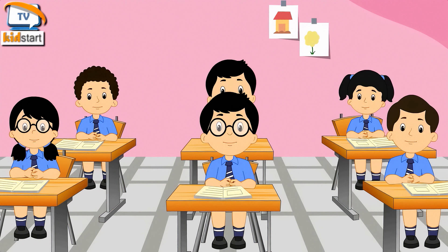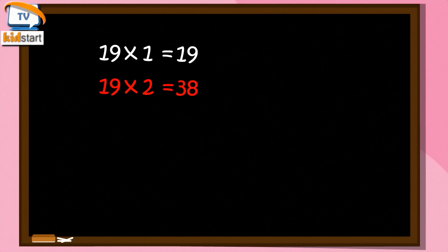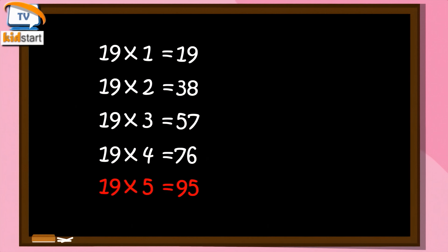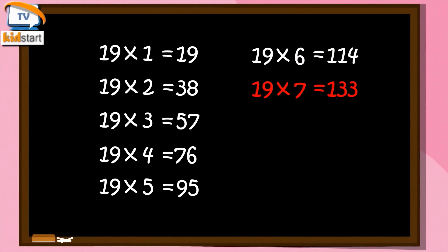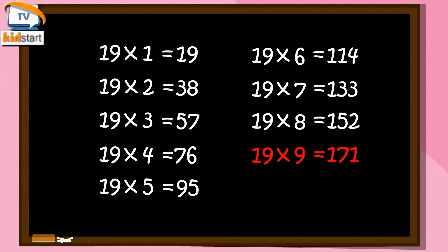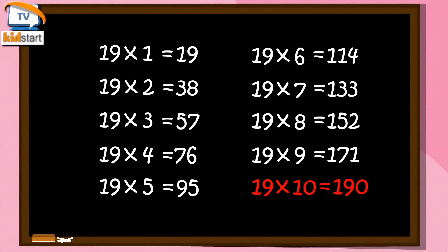Nineteen ones are nineteen. Nineteen twos are thirty-eight. Nineteen threes are fifty-seven. Nineteen fours are seventy-six. Nineteen fives are ninety-five. Nineteen sixes are one hundred fourteen. Nineteen sevens are one hundred thirty-three. Nineteen eights are one hundred fifty-two. Nineteen nines are one hundred seventy-one. Nineteen tens are one hundred ninety.